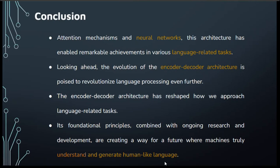Thank you very much for this nice journey about encoder, decoder, and their application in large language models. I have a question: why is the encoder-decoder architecture often referred to as a bridge between understanding and expression, which are really important in the dialogue of an LLM? The encoder and decoder architecture are trying to link each other — they act like a bridge because they take raw input data, comprehend its essence through encoding, and then transform that understanding into a meaningful output through decoding. Encoder encodes the data and the decoder decodes it, generating coherent expressions in LLMs.